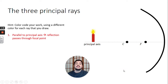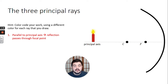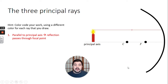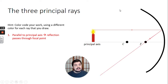The first of the three principal rays we're going to draw is just a representative ray of the infinitely many leaving the candle. The first one we should draw is the one ray that leaves the candle parallel to the principal axis, because we know what it does — it reflects through the focal point. That's what we talked about in the last video, so that ought to be our first principal ray.